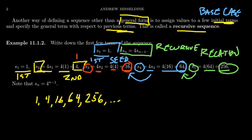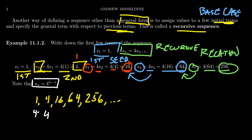It turns out one could describe this same sequence without recursion whatsoever. We're just taking powers of four, starting with the zeroth power: four to the zero, four to the first, four squared, four cubed, and so on. That gives us the general form of four to the n minus one. So we can go from a recursive formula to a general formula, though there's often a benefit to keeping the recursive form.